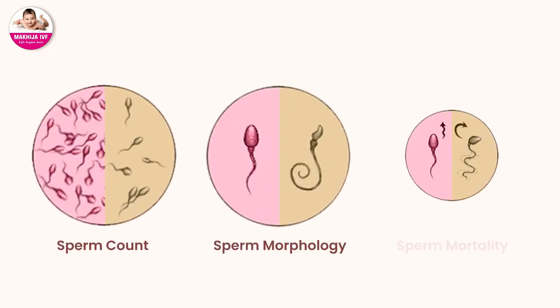So if a couple is not able to achieve a pregnancy, then they come to the clinic for treatment. Because there are one-third reasons, we have to perform several investigations. The first thing is the semen analysis.